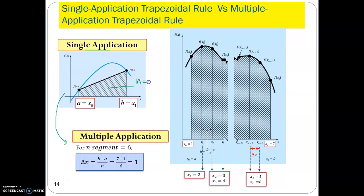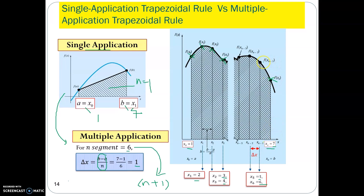For example, increase from n equals 1 to n equals 6. Using the formula, if b equals 7 and a equals 1, then delta x equals (7 minus 1) divided by 6, giving delta x equals 1. This is called the multiple application trapezoidal rule. With 6 segments, you need 7 points — the number of points equals n plus 1. Points are located at x equals 1, 2, 3, 4, 5, 6, 7 — in total 7 discrete points.